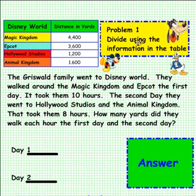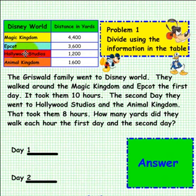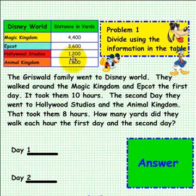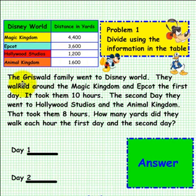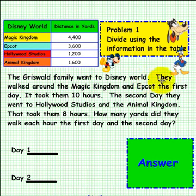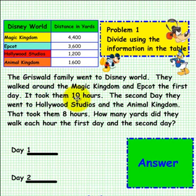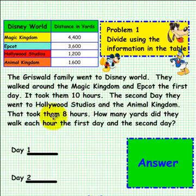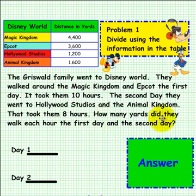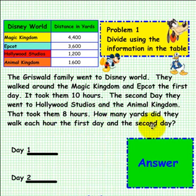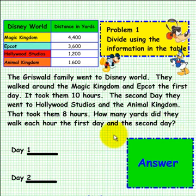Problem 1. Divide using the information in the table here on the left. We have the Magic Kingdom, Epcot, Hollywood Studios, and the Animal Kingdom. Over here is the distance the Griswold family has traveled in each area. The Griswold family went to Disney World. They walked around the Magic Kingdom and Epcot the first day — it took them 10 hours. The second day they went to Hollywood Studios and the Animal Kingdom, which took them 8 hours. How many yards did they walk each hour the first day and the second day? Please pick up a pen and place the answer here for the first day and here for the second.